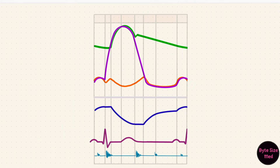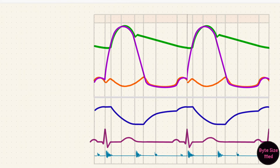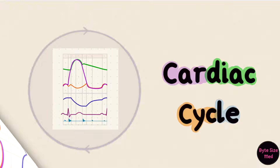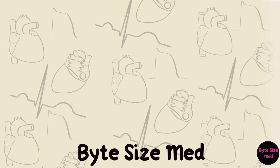And the whole thing repeats over and over again. That is the cardiac cycle on Wigger's Diagram. I hope this video helped you out. If it did, you can give it a like and subscribe to my channel. You can check out my cardiac cycle playlist if you'd like help with learning it part by part. Thanks for watching and I'll see you in the next one.